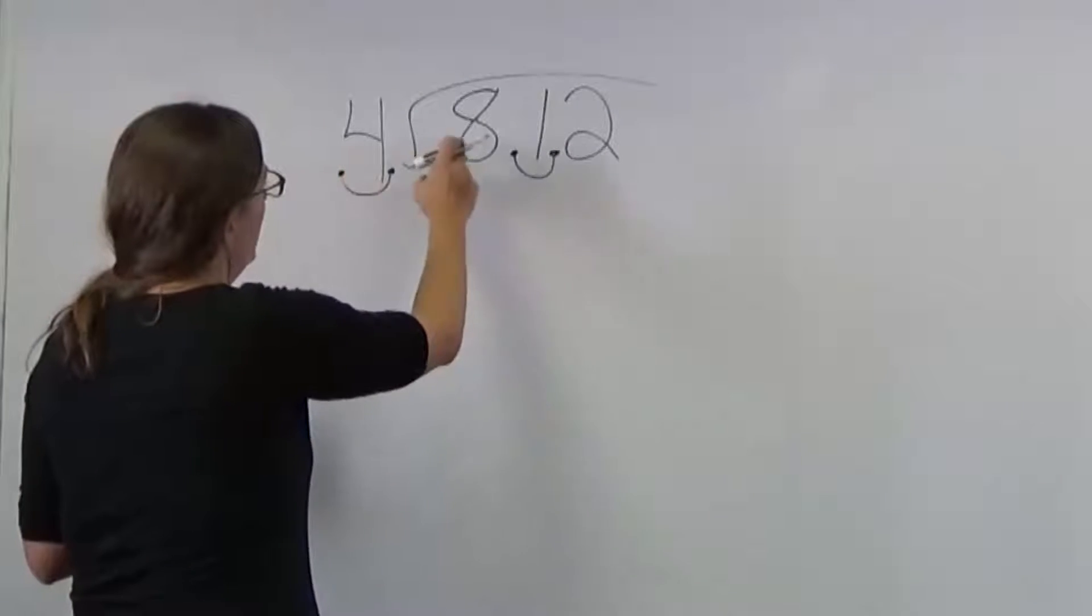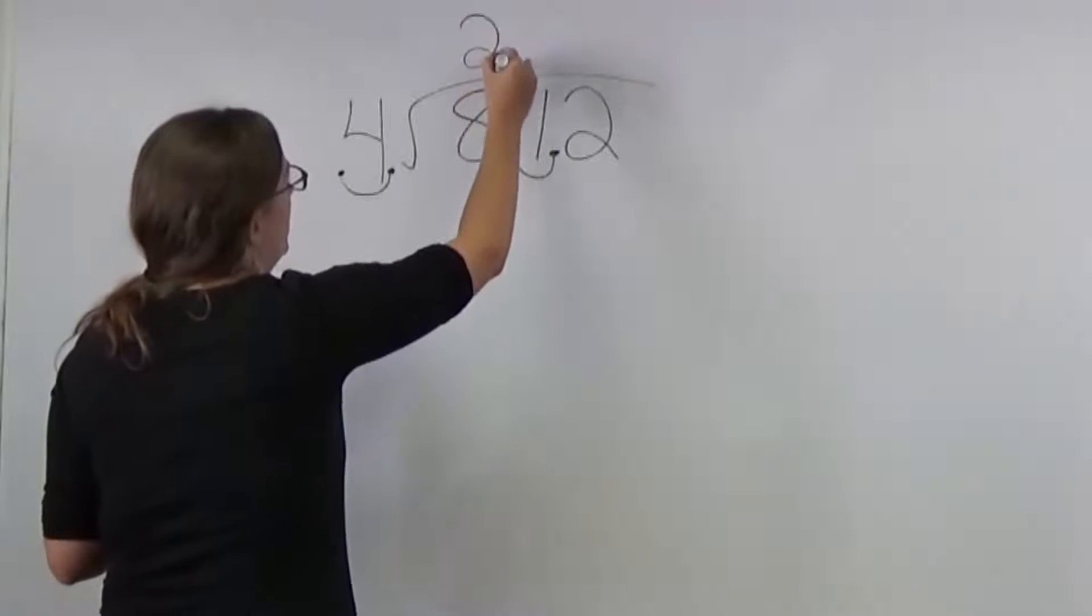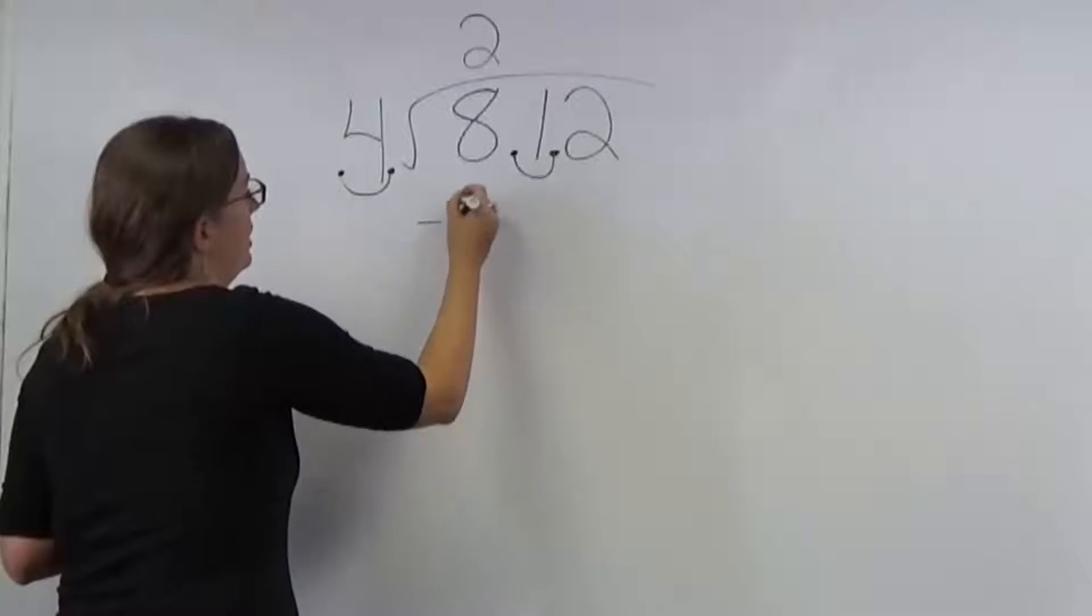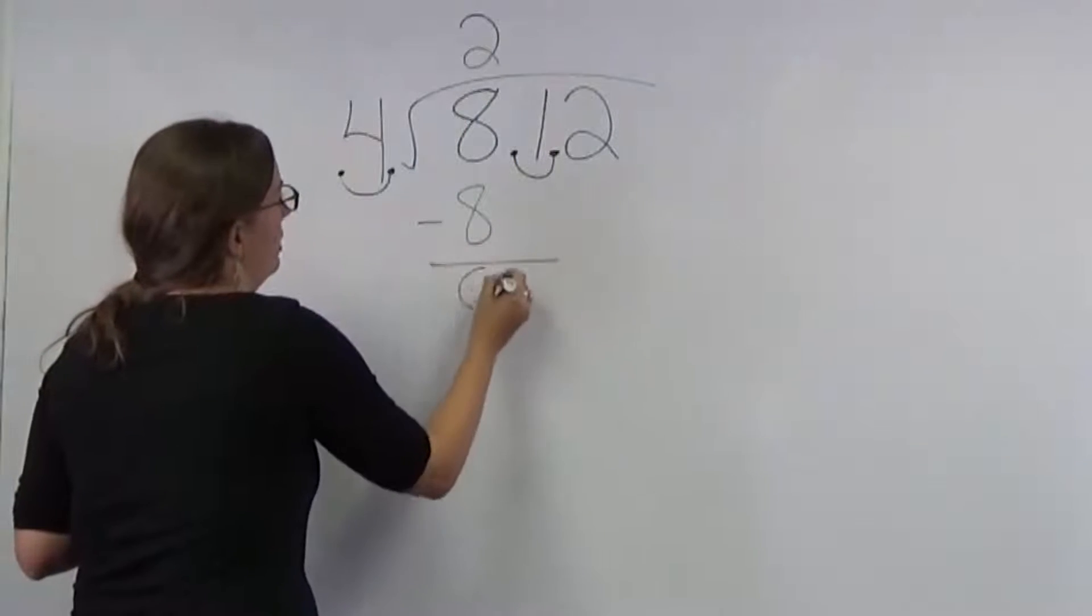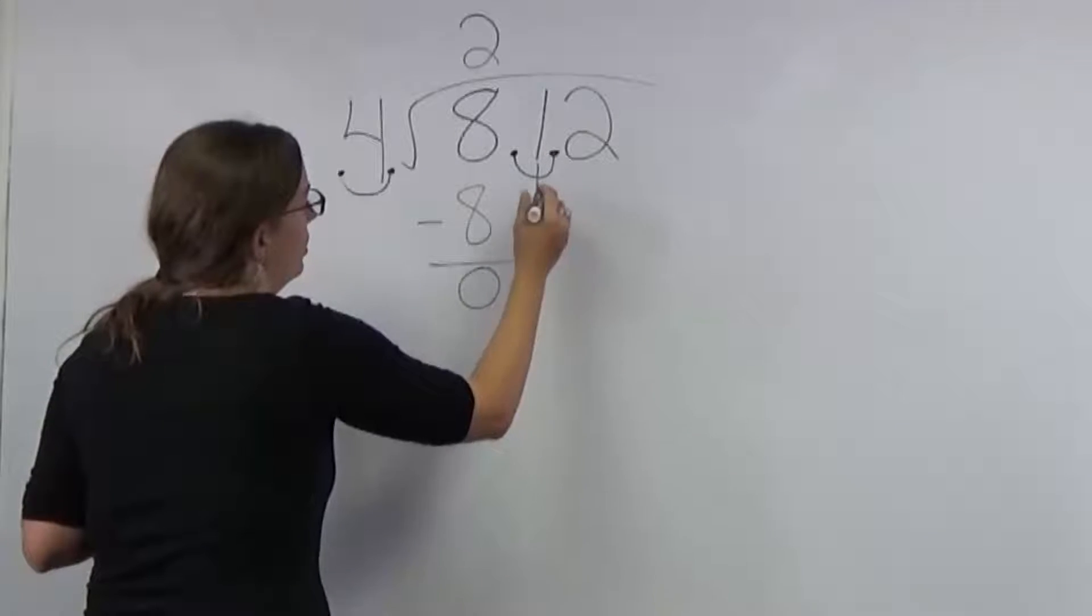So you would do 4 into 8, which goes in 2 times. 2 times 4 is 8, and you subtract that. That gives you 0. Then you're going to bring down this 1.